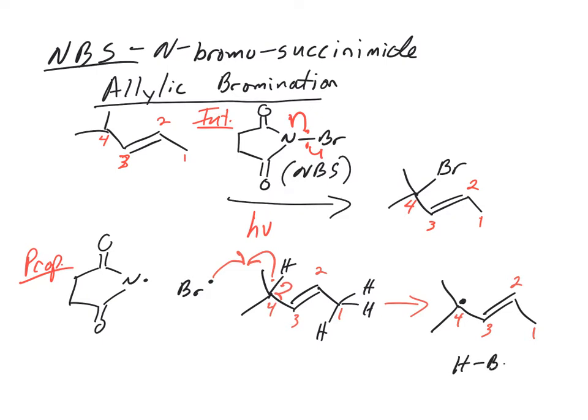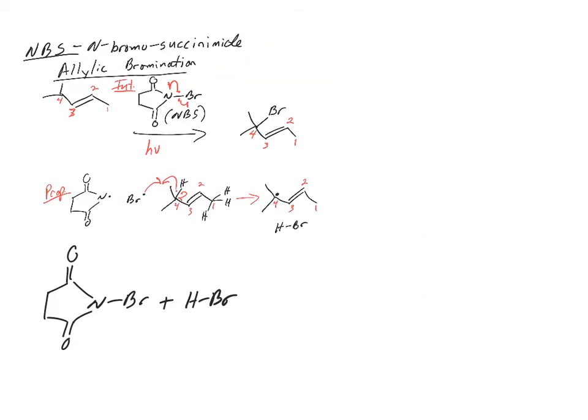That's going to become important in a second. That's a propagation step, so it actually gets us to a really stable tertiary allylic radical—tertiary because it's bonded to three different carbons. To keep going on this, there's something special about NBS. What's special is this next step. NBS actually creates a very small amount of Br2. How does it do that? Well, we just generated HBr.